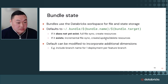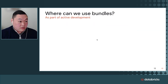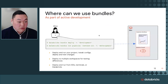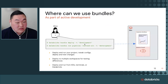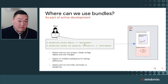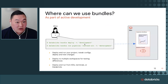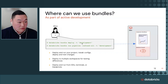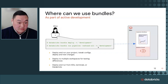Where can we use bundles? Bundles can be used to deploy and run your project, tweak configs, and deploy and test changes. As you can see here, we use the CLI command: databricks bundle deploy --target development. Before you start development and begin using a Databricks YAML, you can refer to my peer Dustin Van Nooy's video on how to initialize a Databricks Asset Bundle template using databricks bundle init — we won't cover that in this video. Here you would deploy to the development target and then run a DLT pipeline to refresh all using that same target.